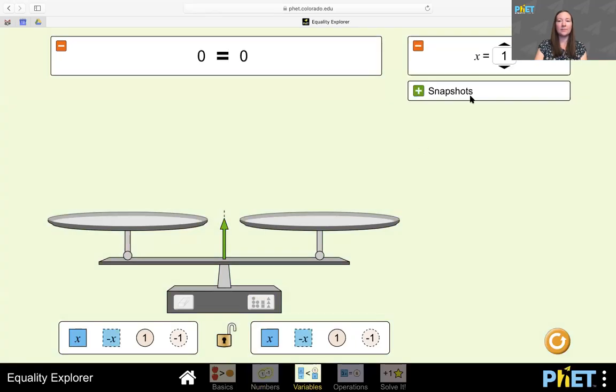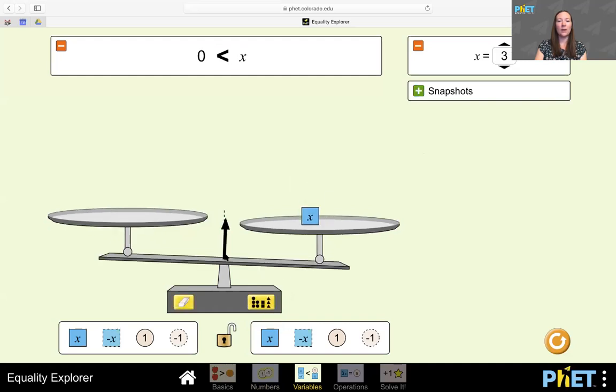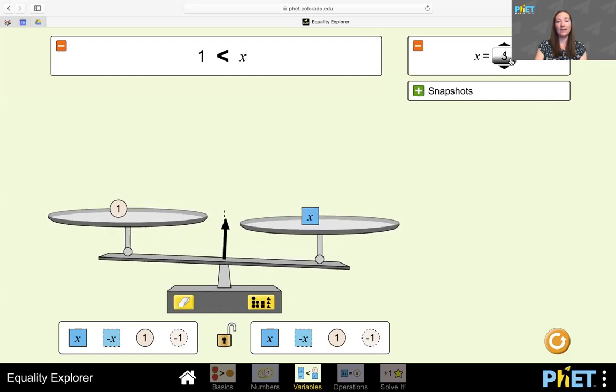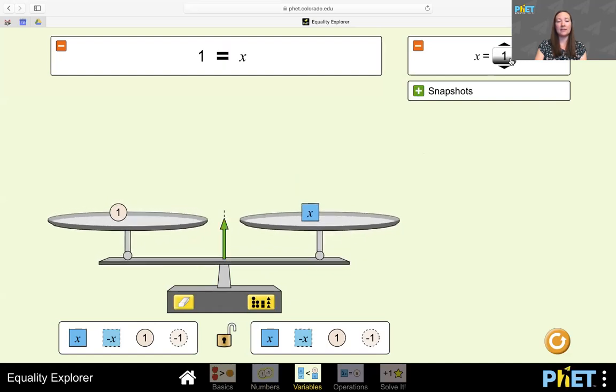On the third screen, I have the option to change the value of a variable. So as I drag that up here to my balance, I can see how changing that value makes it unbalanced. And there's a particular value that balances it.